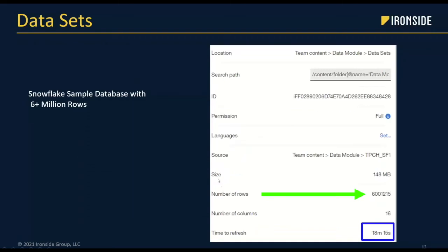Here's an example where I have multiple data sets, each loaded separately, then joined together to create something like a star schema in a data module. I can actually refresh customers and facts and other tables at separate times because they are individual data sets. A data set is cached data, so you do have to refresh it — it's not real-time data — but because of that, you can manage them individually. I loaded 6 million rows of data, and the refresh took about 18 minutes, done on my local computer against Snowflake over my internet connection.